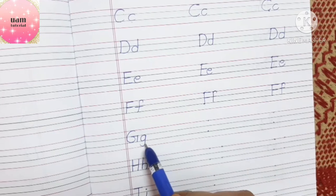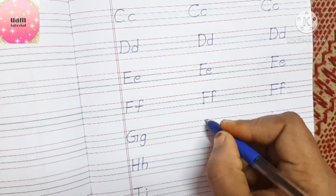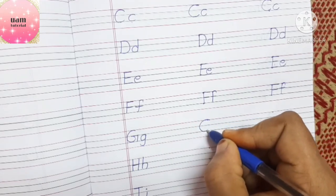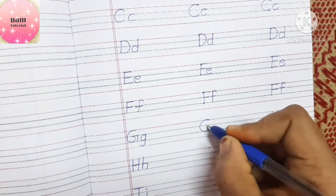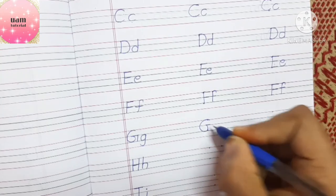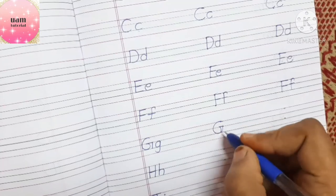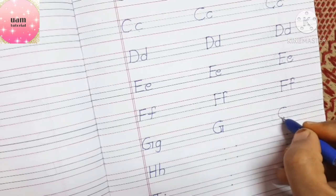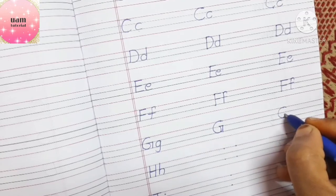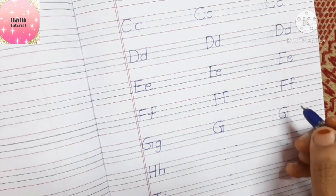Now the letter G — capital G and small g. For capital G: write a right curve from the first line to the third line, touch the second line, write a small sleeping line, then a standing line from the second line to the third line.